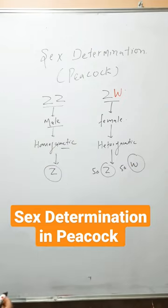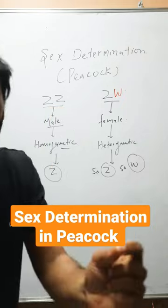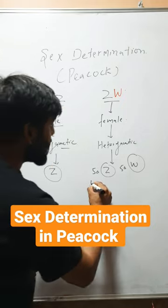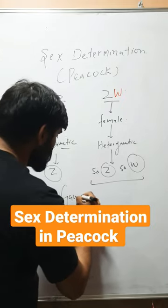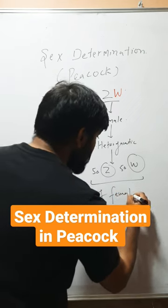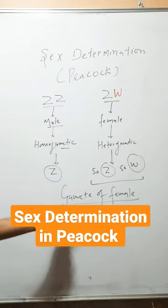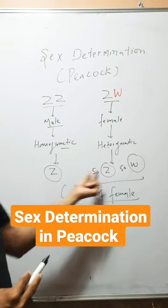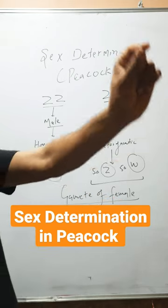So here in case of peacock you can see that the gender of newborn is decided by gamete of female, not by male. Gender is decided by gamete of female. Which one will fuse with this? That will decide the gender of newborn.